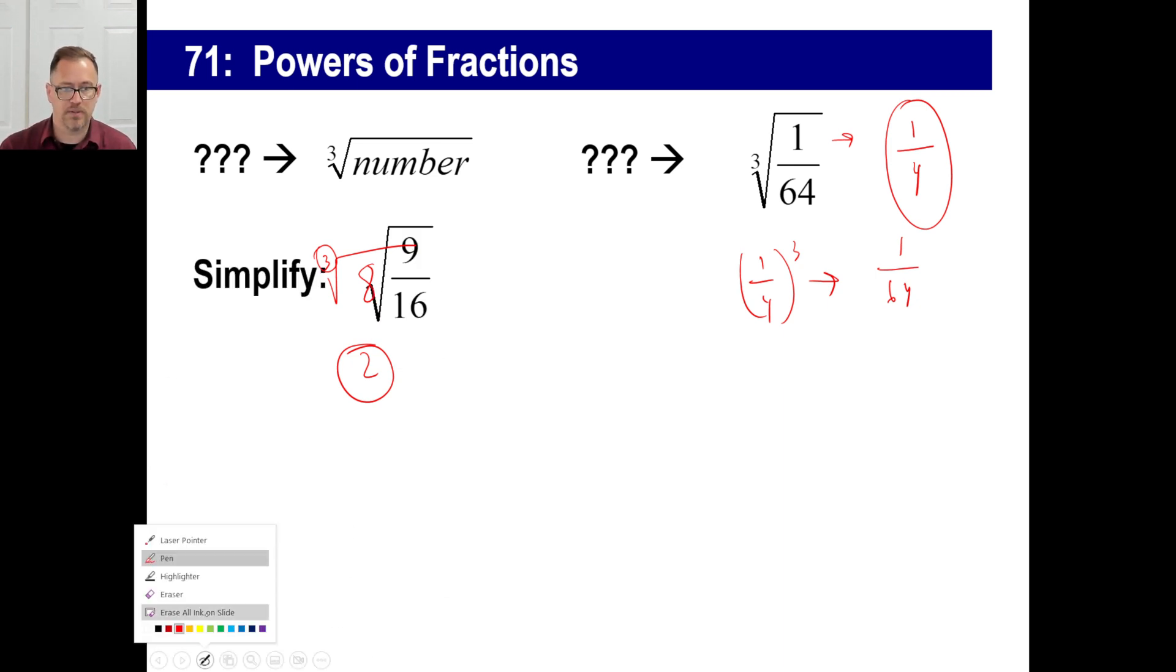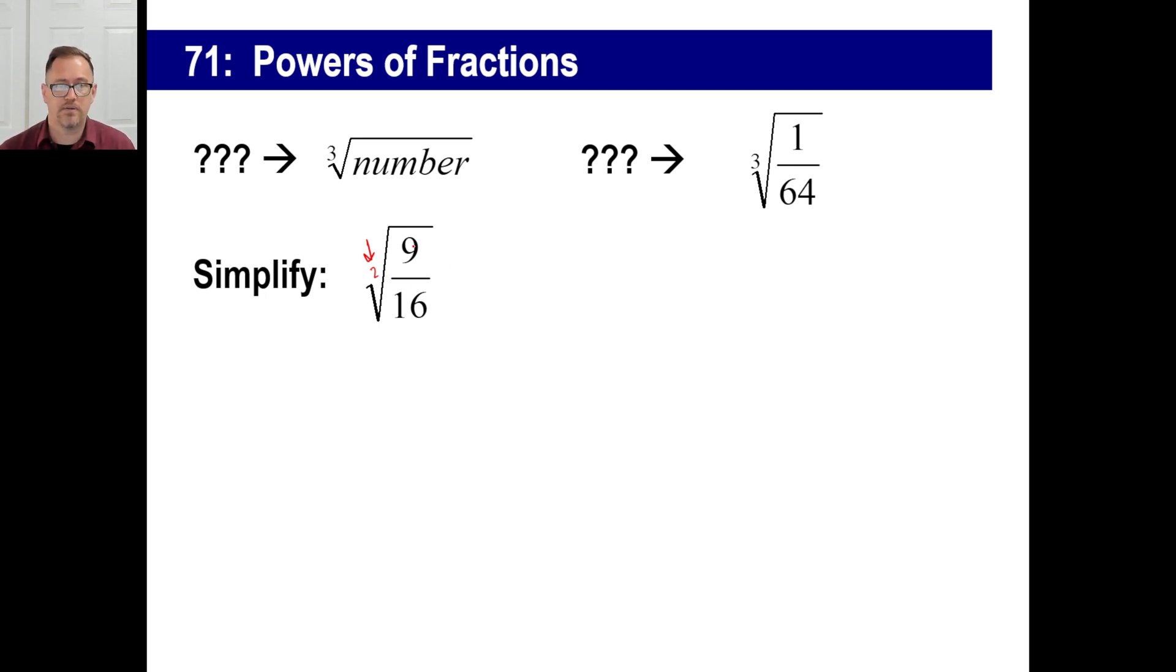If you had to simplify this one, of course, if you don't see a number here, what do you assume it is? It's a two, right? It's a square root. What's the square root of nine sixteenths? All you need to do is go to the numerator and do it, and then to the denominator and do the same thing.